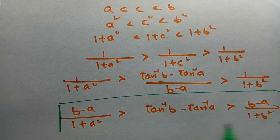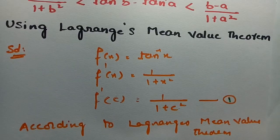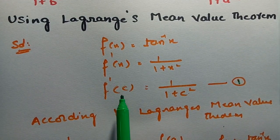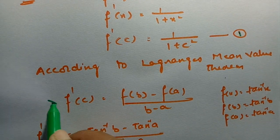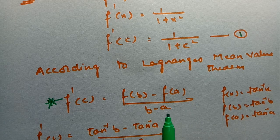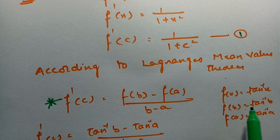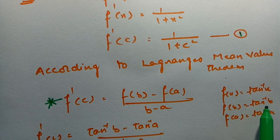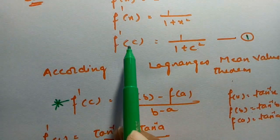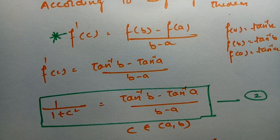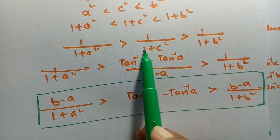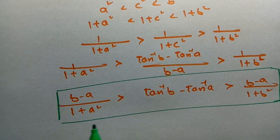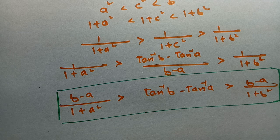This is the inequality obtained using Lagrange's mean value theorem. To summarize: we take f(x) = tan⁻¹(x), find f'(c), and apply the formula f'(c) = [f(b) - f(a)]/(b-a). Substituting f(b) = tan⁻¹(b) and f(a) = tan⁻¹(a), then replacing 1/(1+c²) with [tan⁻¹(b) - tan⁻¹(a)]/(b-a) and multiplying by (b-a), we obtain the inequality. This is the most important problem using Lagrange's mean value theorem.